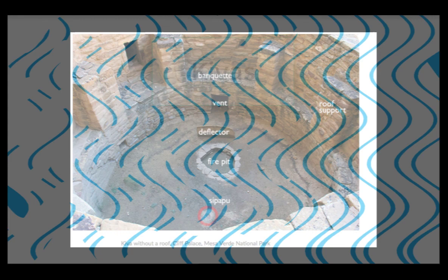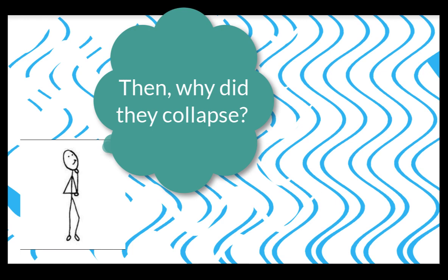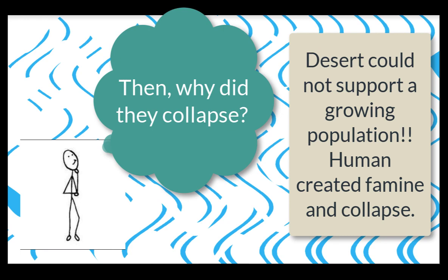So how did they collapse, and why are their cliff dwellings vacant? We don't know for certain, but think of our story: a desert eventually cannot produce enough for a growing population. We do have evidence at the end that there was cannibalism in these communities, which suggests there was most likely a drought or famine, and the government was not able to provide for a growing population.